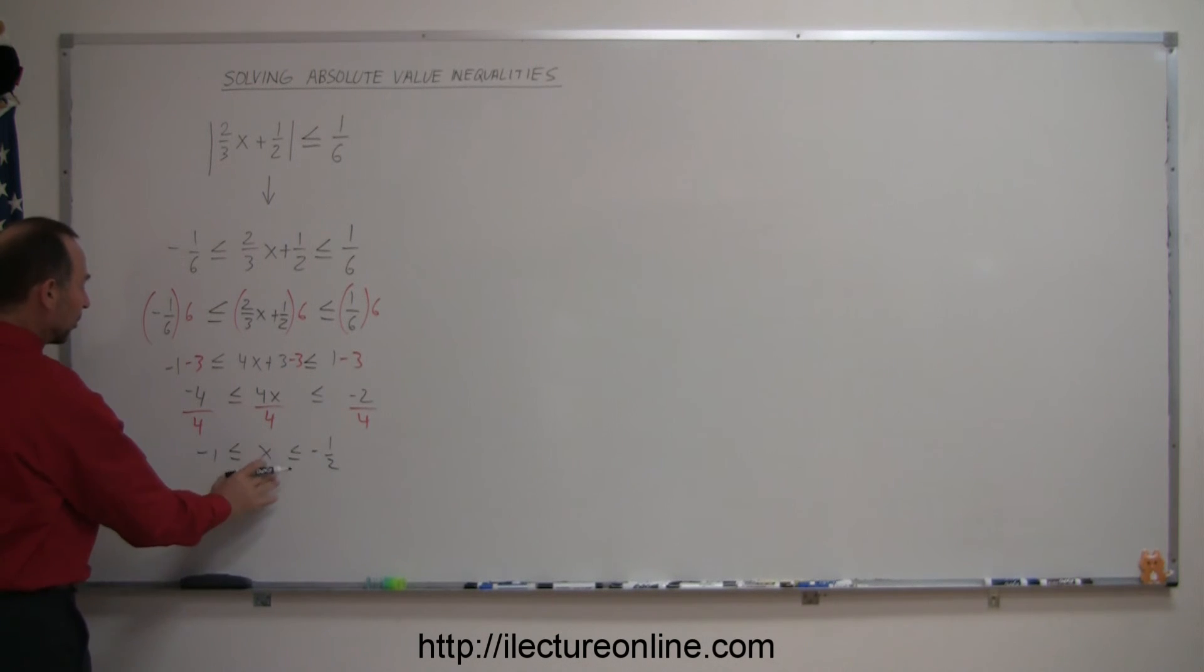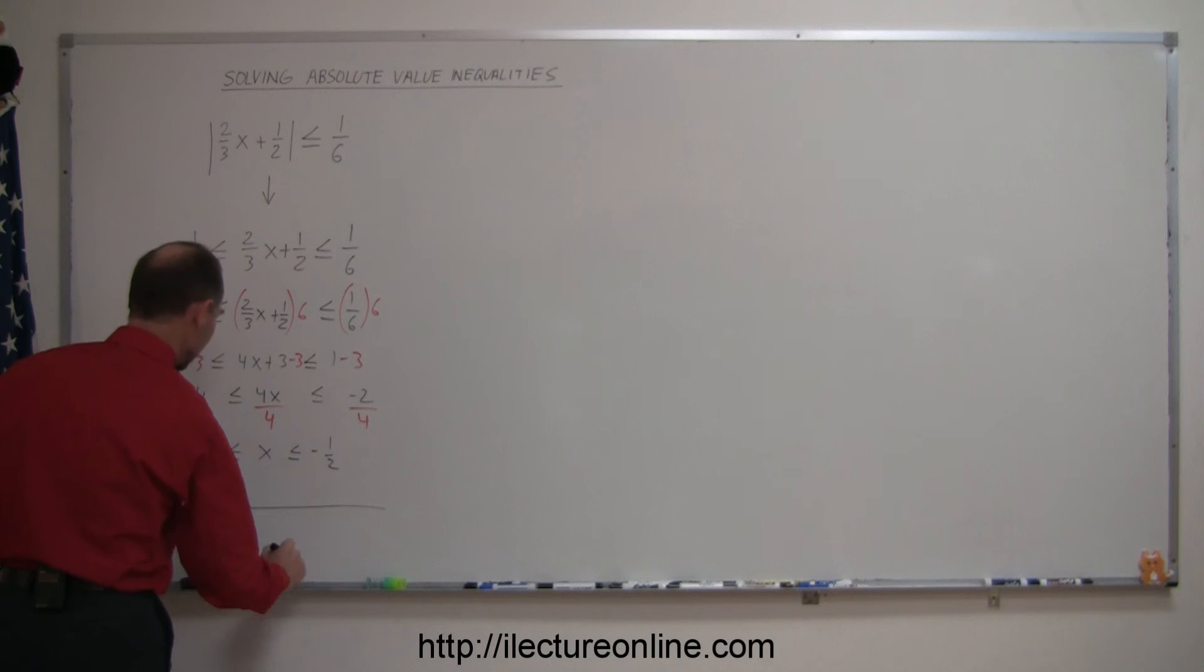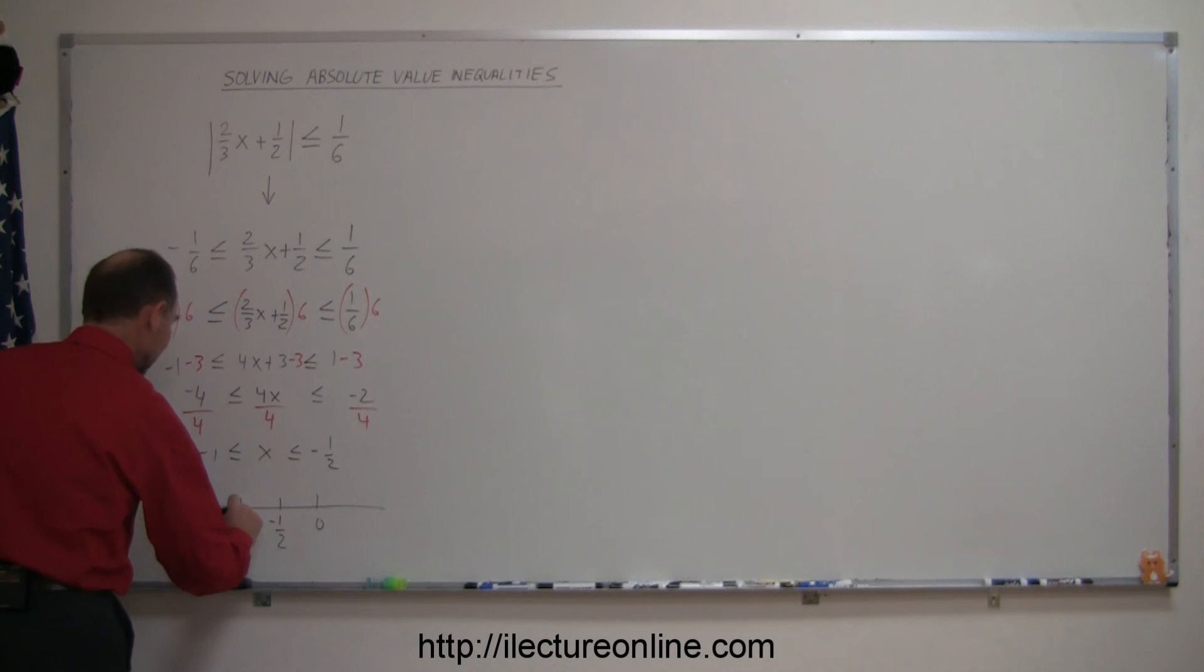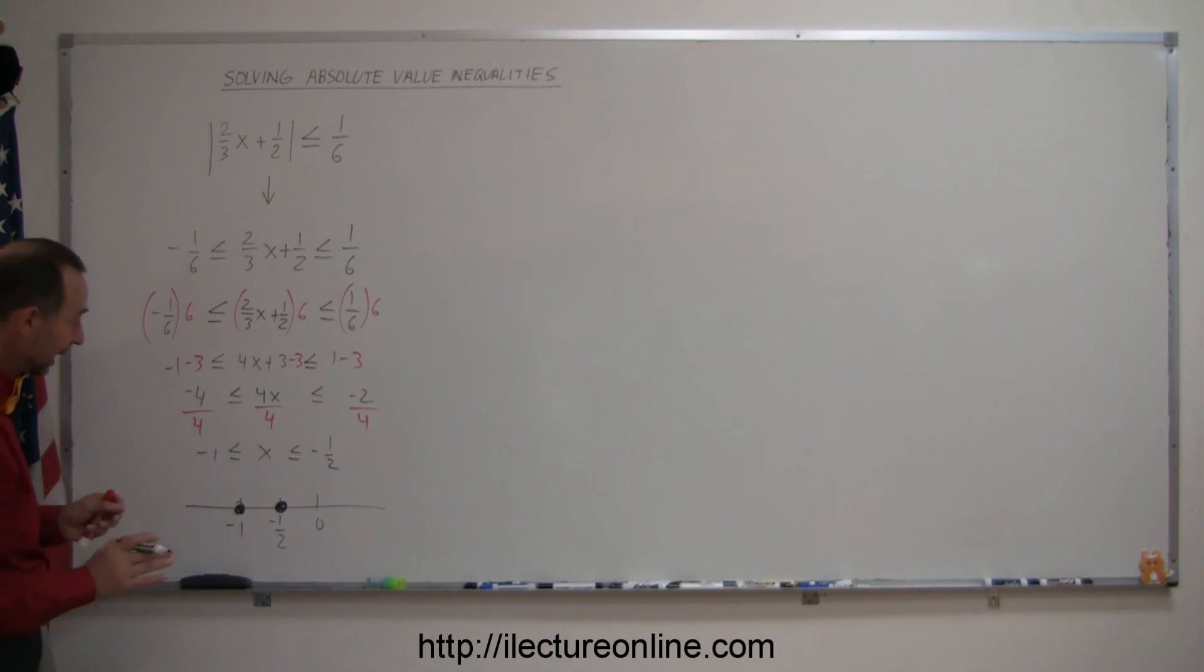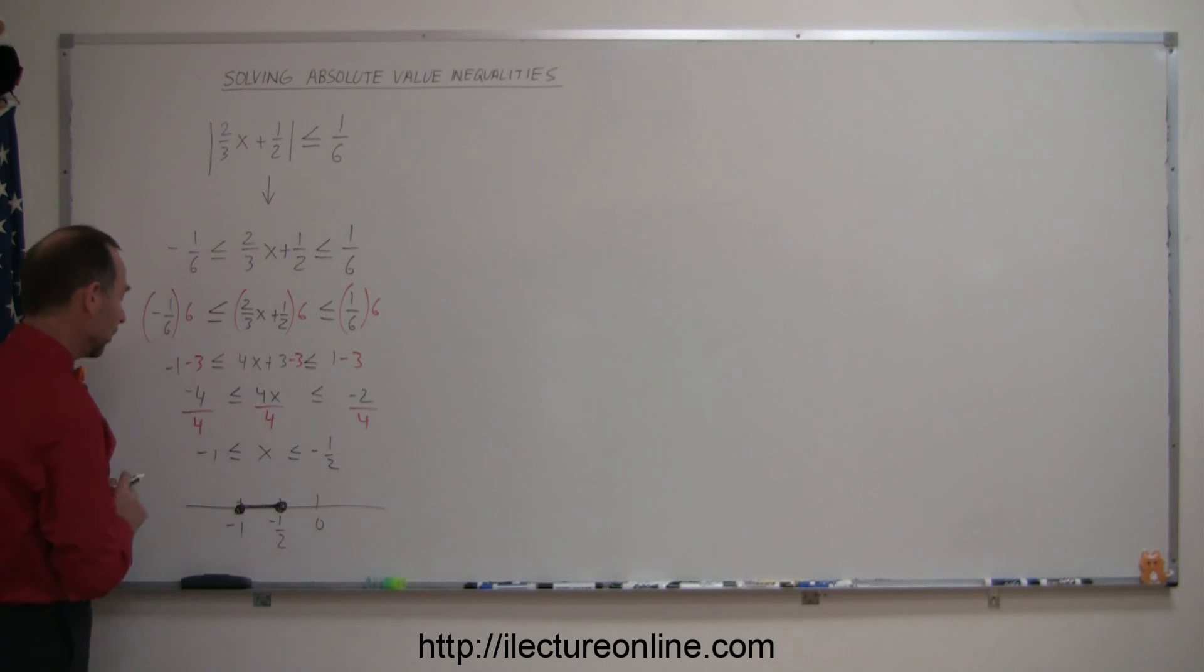So this tells me that x must be between negative one and negative one-half. If we put that on the number line, if this is zero, this is negative one, this is negative one-half. We can see that it includes the endpoints, negative one and negative one-half. So I draw filled-in circles that indicates that it includes the endpoints, and everything in between, like so.